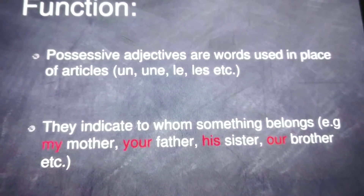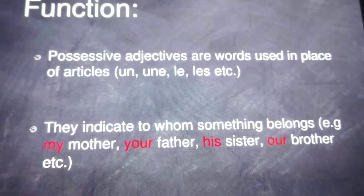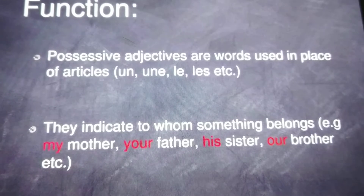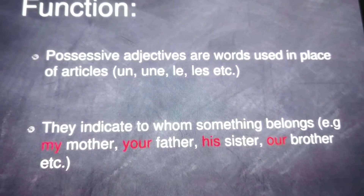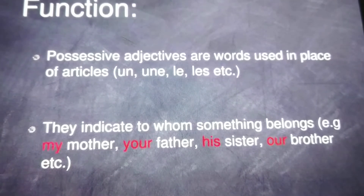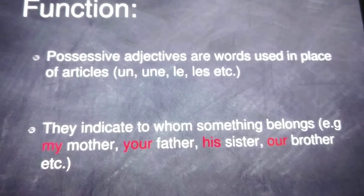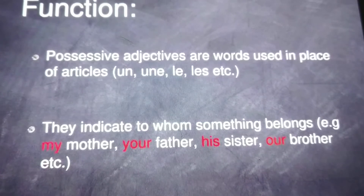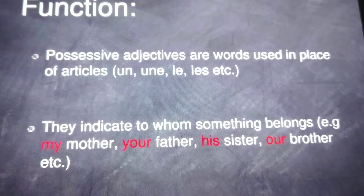For example, we say 'the book' or 'a book' — it can be any book or a specific book. But if we say 'my book,' that is a possession — my book, your book, his or her book. That is denoted by the possessive adjective. They indicate to whom something belongs: my mother, your father, his sister, our brother. It shows possession of an object or a human being.